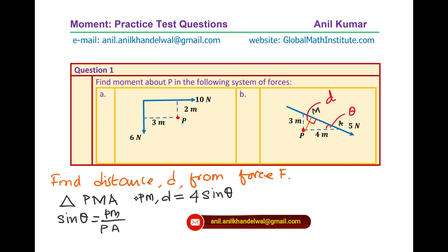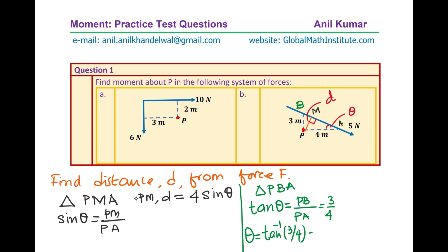And because of that we are already given the triangle here. Let me call this point B. So if you consider the triangle PBA, now in that case again theta is the common angle. We can write down that tan theta is equal to opposite side PB over the adjacent side PA. Now both are given to us as 3 and 4, and therefore theta is equal to tan inverse of 3 by 4.